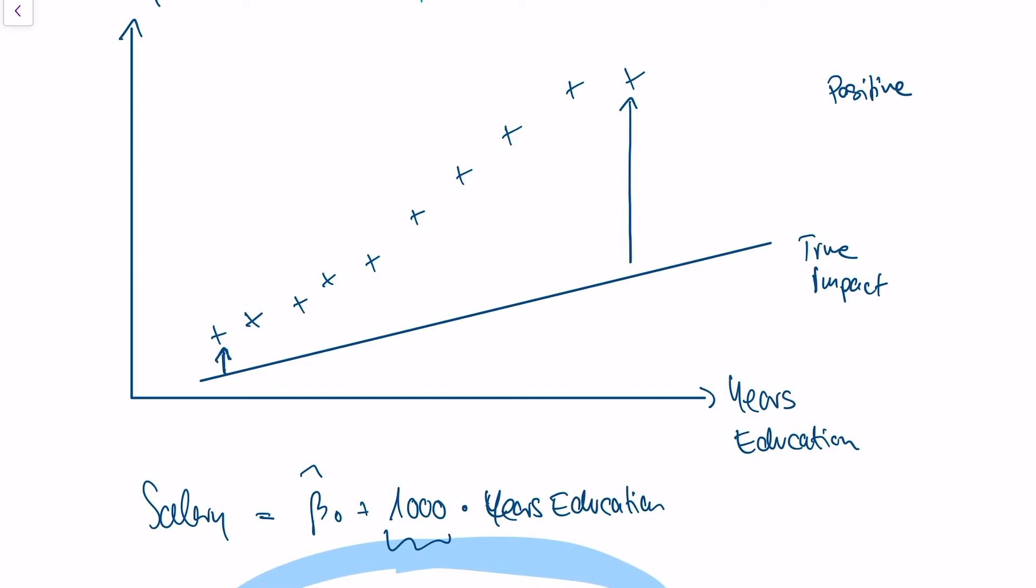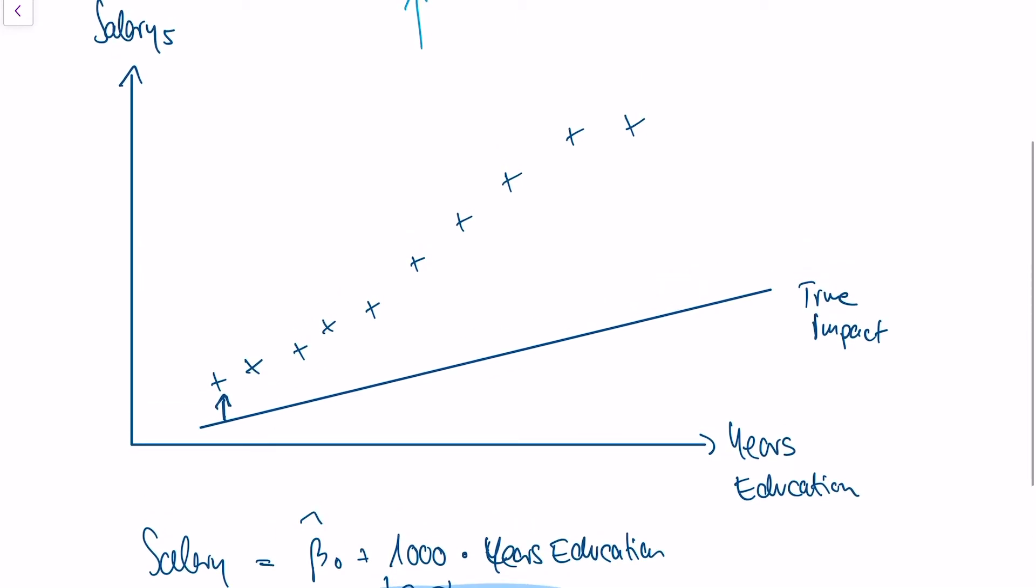And in fact, I would argue that this is the case in real life. Why? Because there's another variable that significantly impacts the salary, and that is the socioeconomic status. So people who have rich parents will have access to better jobs because the parents have better friends or richer friends and so on.